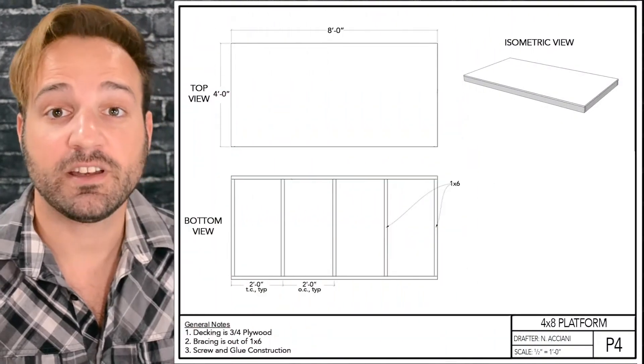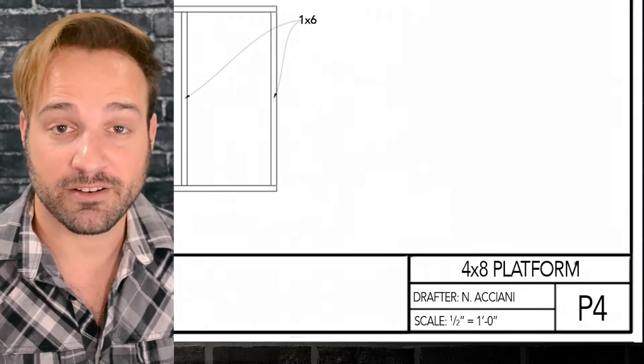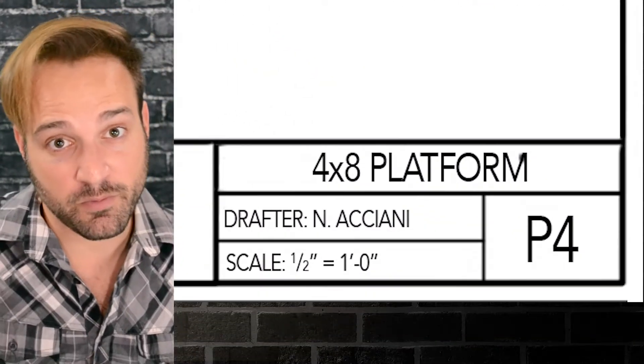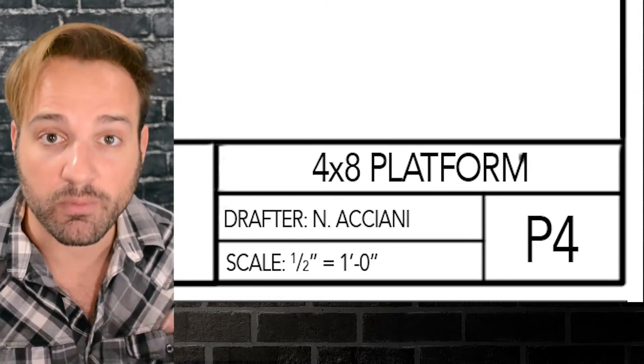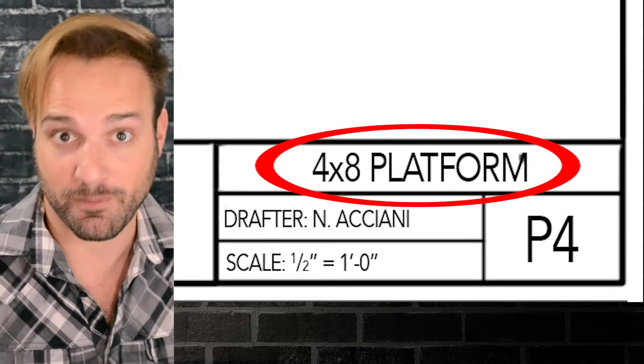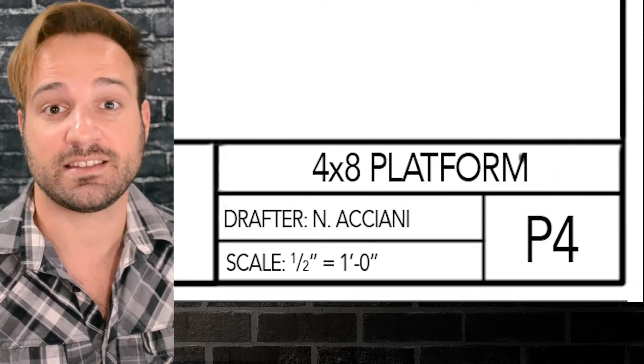So let's take a look at a basic build plan. The first thing that you want to do is look at the title plate, either in the bottom right hand corner, it might be full length on the right side or all the way across the bottom. The title block should tell you what it is. This is a four by eight platform, what show it's for and the scale that you're building in.